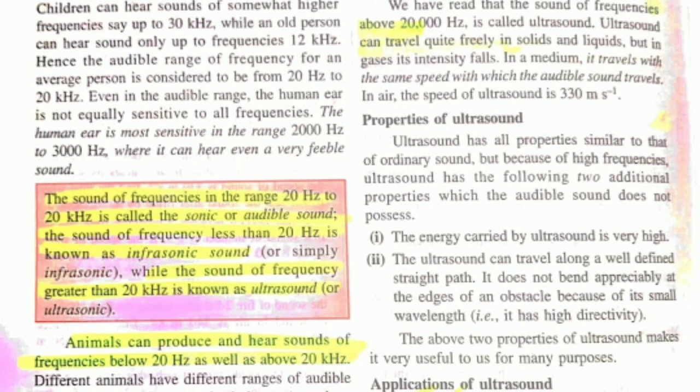Animals can produce frequencies below 20 hertz as well as above 20 kilohertz. For example, elephants can produce frequencies below 20 hertz. You should know which frequencies different animals can produce.